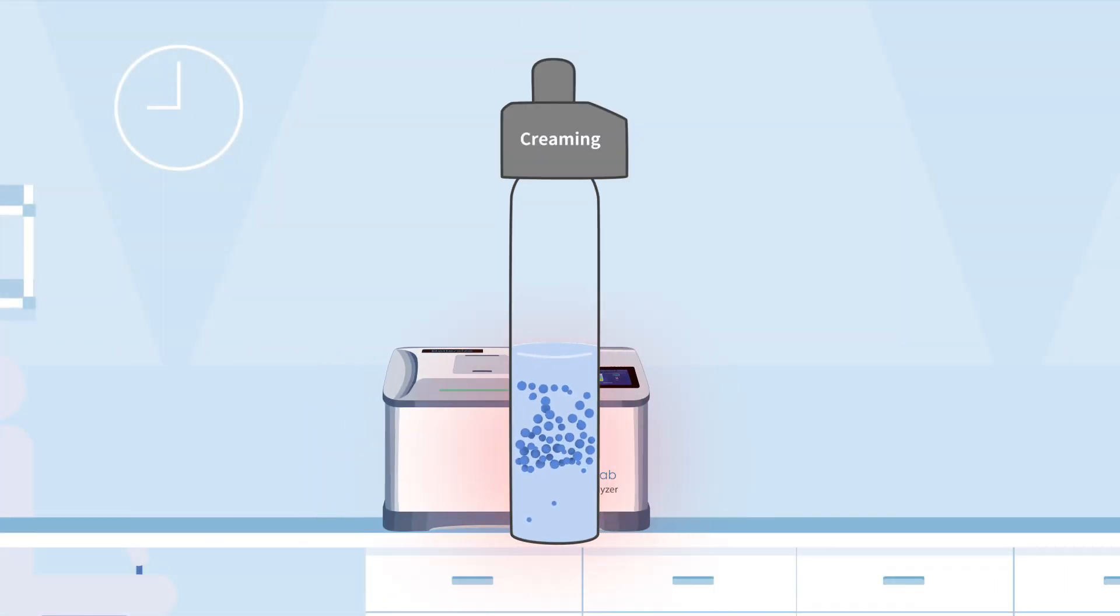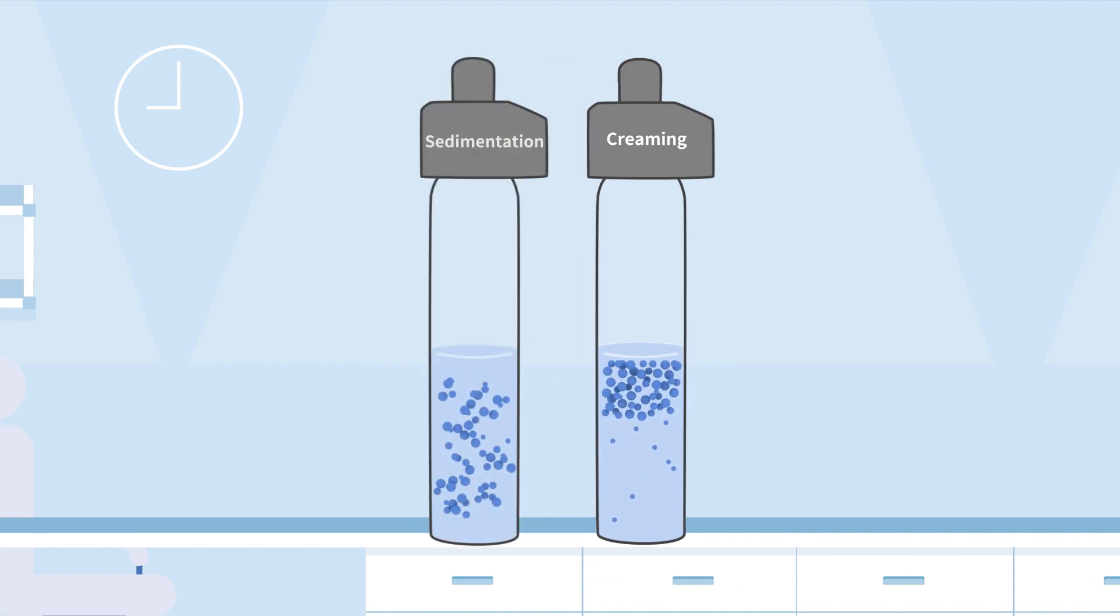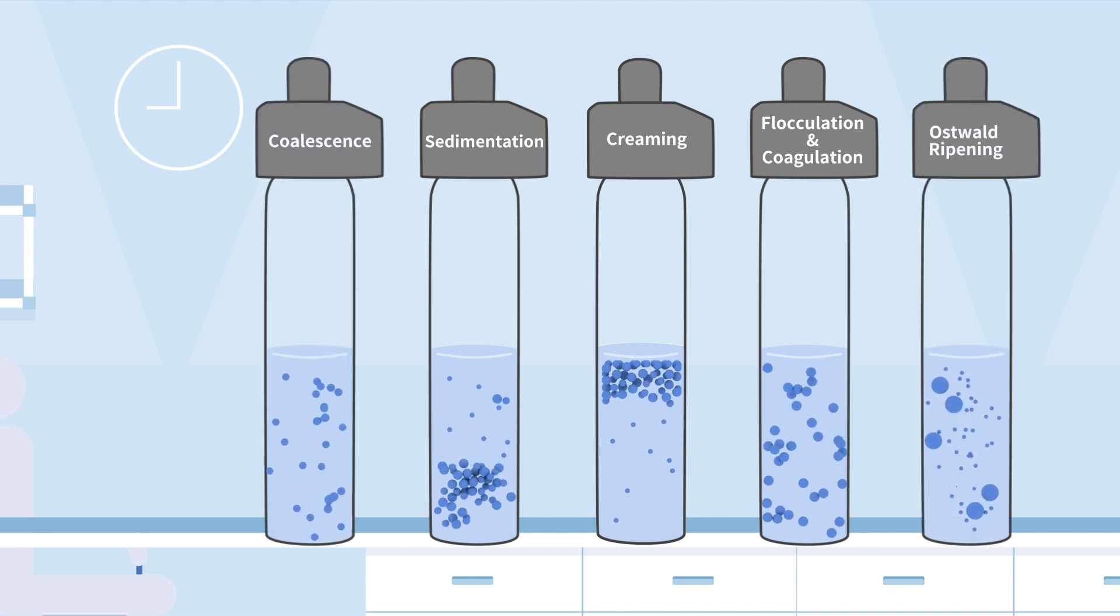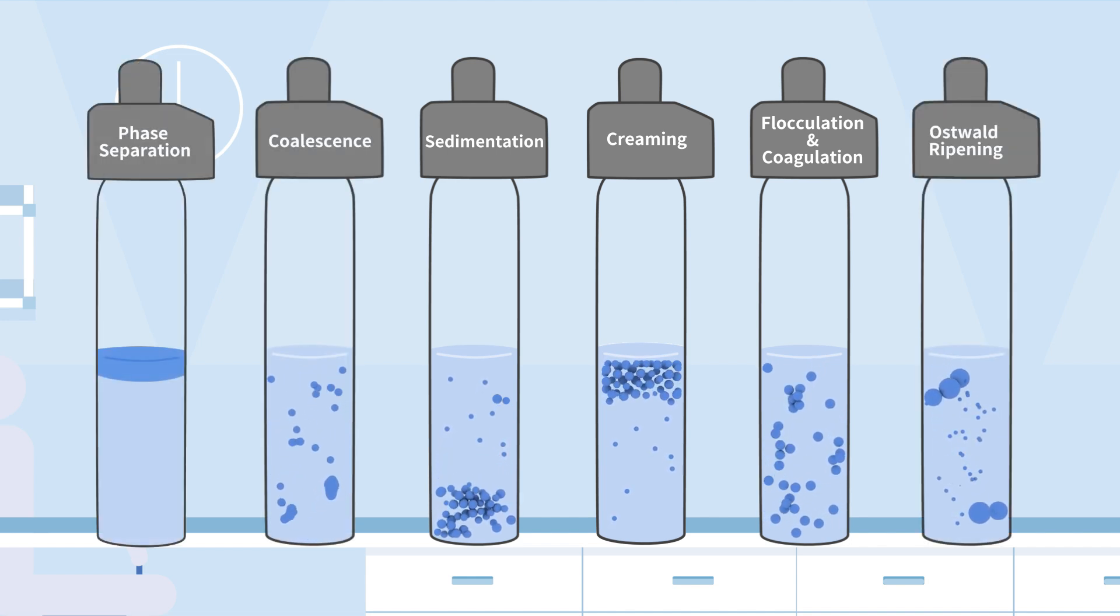A professional stability analyzer can detect creaming and other phenomena like sedimentation, flocculation or coagulation, coalescence, Ostwald ripening and phase separation, providing essential insights for optimization.